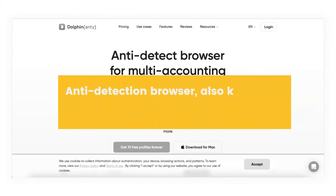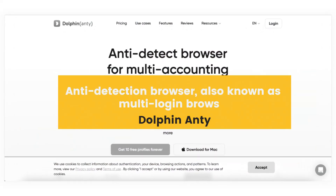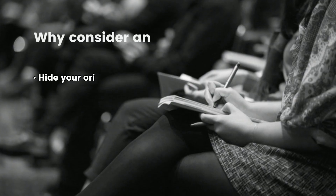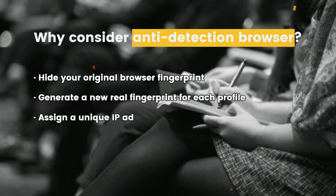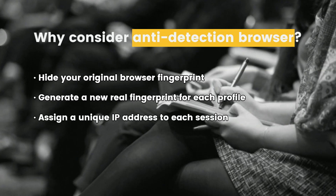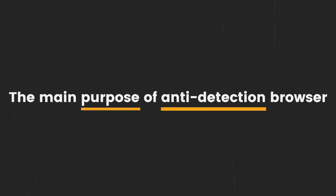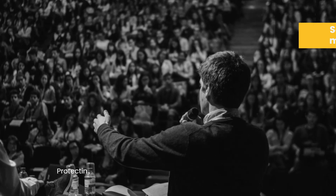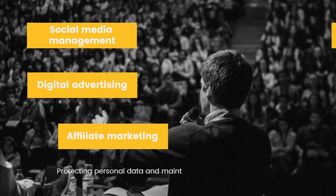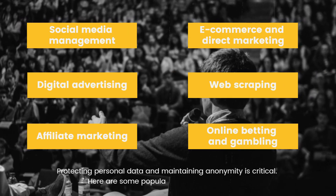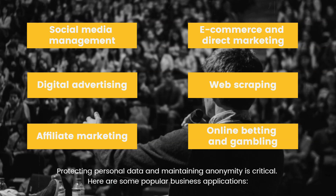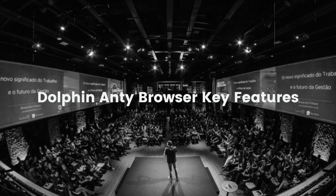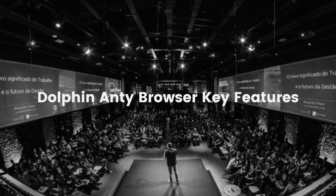An anti-detection browser, also known as a multilogin browser — why consider one? The main purpose of an anti-detection browser is protecting personal data and maintaining anonymity. This is critical for many popular business applications, such as the Dolphin anti-detect browser.